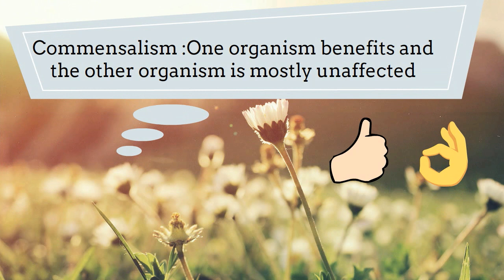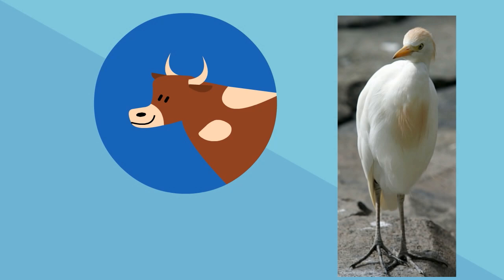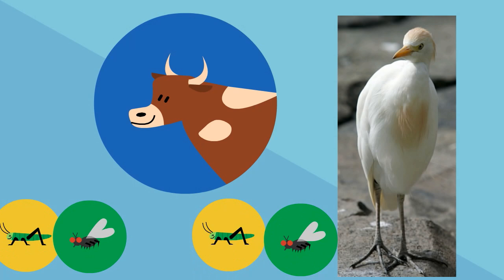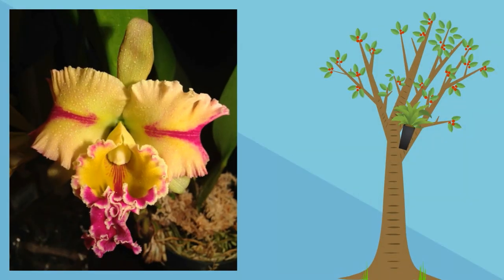Let's look at a couple of examples to help us get a better understanding of commensalism. Up first are cattle egrets and cows or bulls. The cattle egret like to follow the cows along because the cows stir up insects from the grass. The cattle egret eat the insects and the cows for the most part are unaffected.